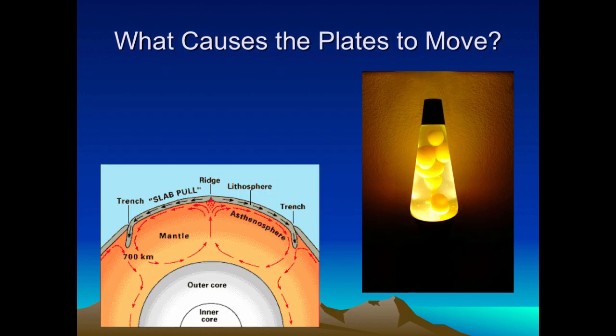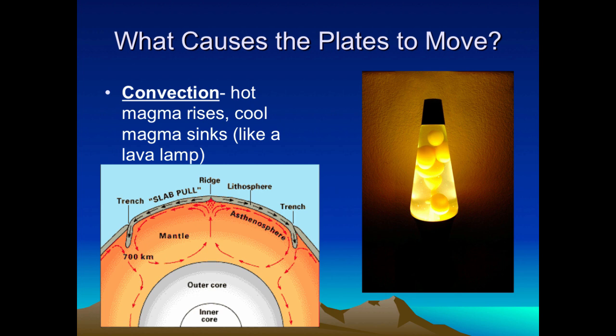So what causes all the plates to move? The answer is convection. Convection is when hot magma rises, cools, and sinks, creating a circular motion. As we go farther into the Earth it gets hotter, so the magma near the outer core rises, and then far away from the core it cools off and sinks, creating this circular motion. This is what allows the plates to move on top of the asthenosphere.